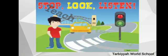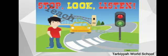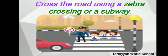Before crossing the road, look to your left, then to your right, and then to your left again. You can cross the road only when no vehicle is coming. Cross the road using a zebra crossing or a subway, and always cross the road with an elder.